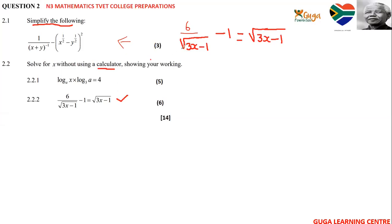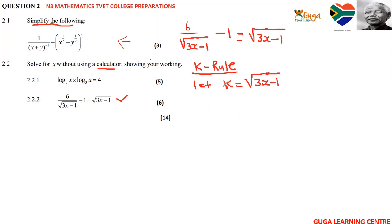For the last question: six over root of three x minus one, minus one equals root of three x minus one. You can square both sides, but another way is to use the k-rule. We let k equal root of three x minus one, which will simplify our expression. So we will have six over k minus one equals k.